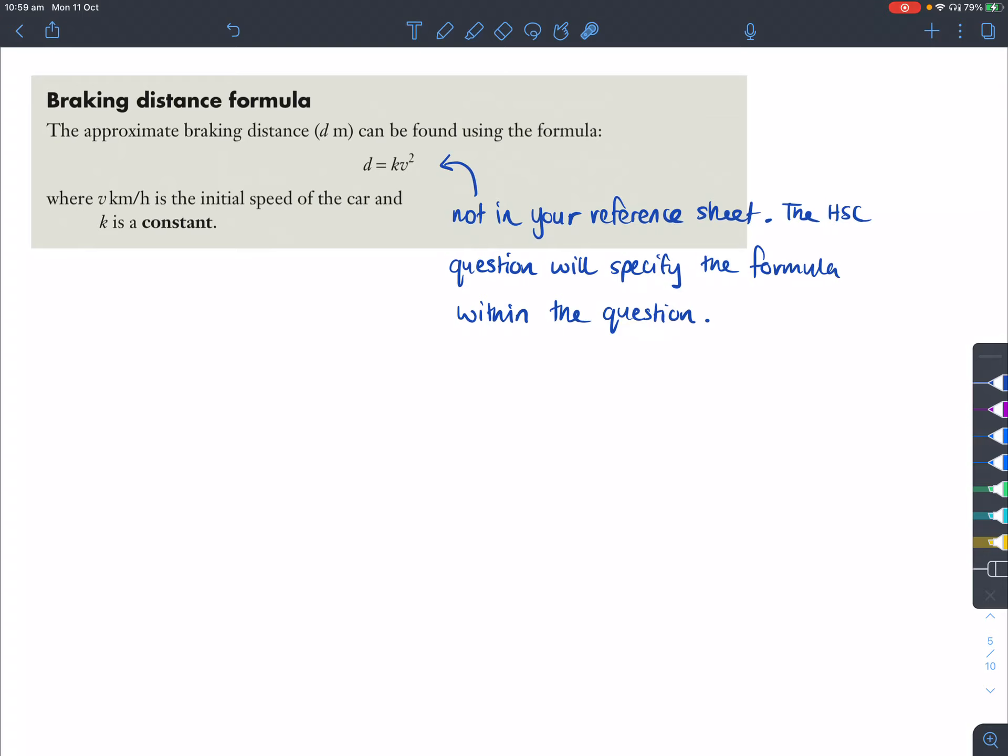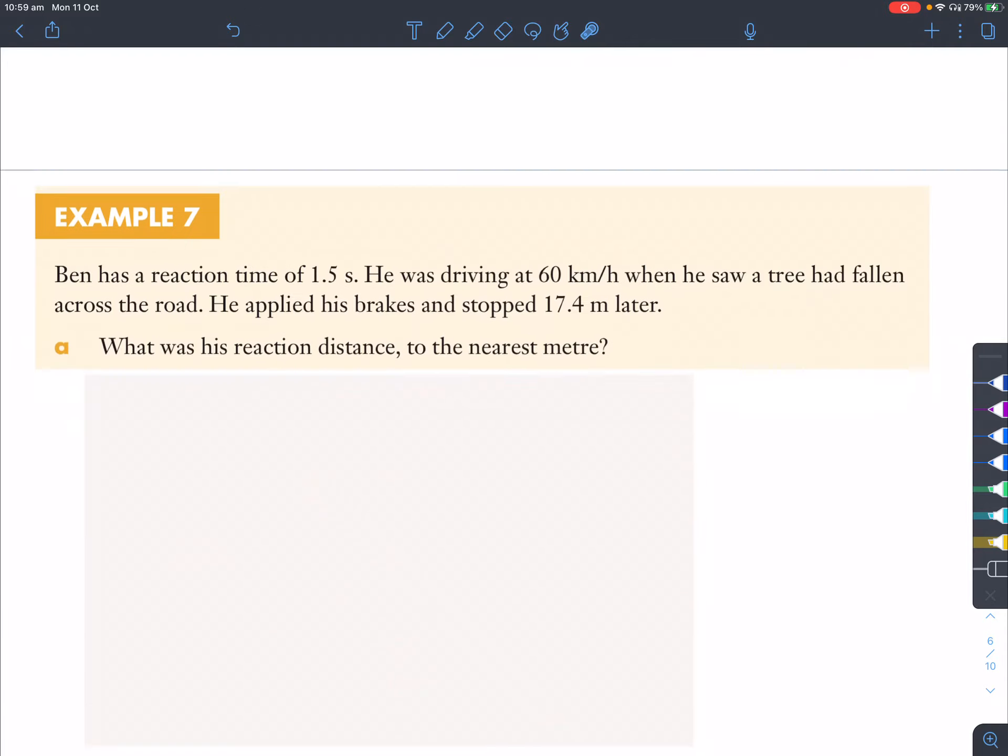Now, the braking distance formula can be approximated using D equals KV squared. So, that K value there could be some value like 0.05, 0.06, whatever it is. And it depends on situation to situation. This is learned on your reference sheet, by the way, and on the HSC question, it would actually specify the formula as well as the K value, possibly, within the question. An interesting thing that I find about this formula is that D is in meters, whereas V, which is our velocity or speed, in this case, is in kilometers per hour. Just to make sure that you know that usually formulas require us to have the same kind of units, like both meters or both kilometers. This one is in meters, this one is in kilometers per hour.